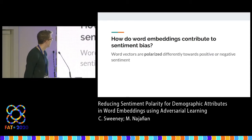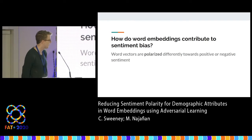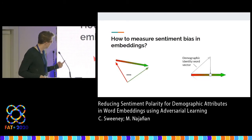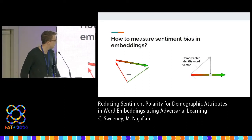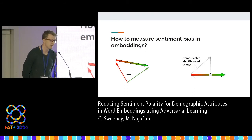The question becomes: how do word embeddings contribute to that sentiment bias? My claim is that word vectors are polarized differently towards positive or negative sentiment. To measure this, we grab a bunch of ground truth negative sentiment words and ground truth positive sentiment words. We take the principal component direction of a matrix of each of these word sets, take the resultant subtraction between these two vectors, and for any demographic identity keyword, we project that word vector onto that direction. That projection is the sentiment polarity — the more positive, the more it leans toward positive sentiment, and vice versa.